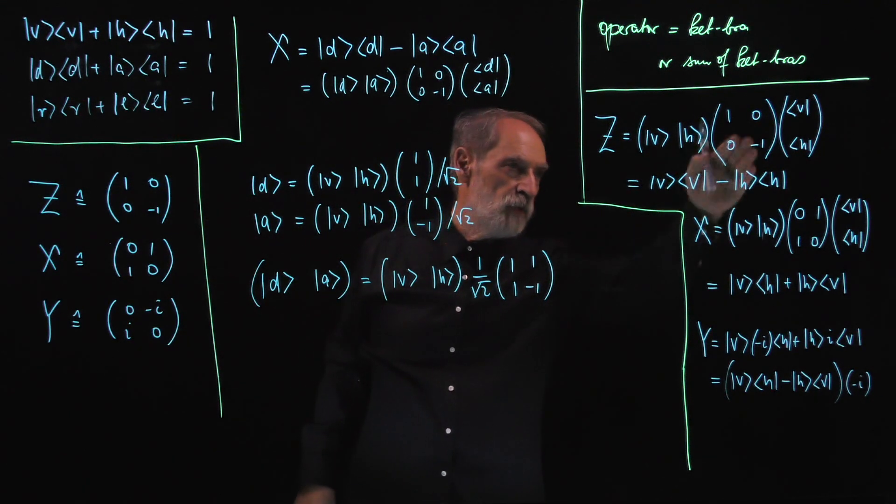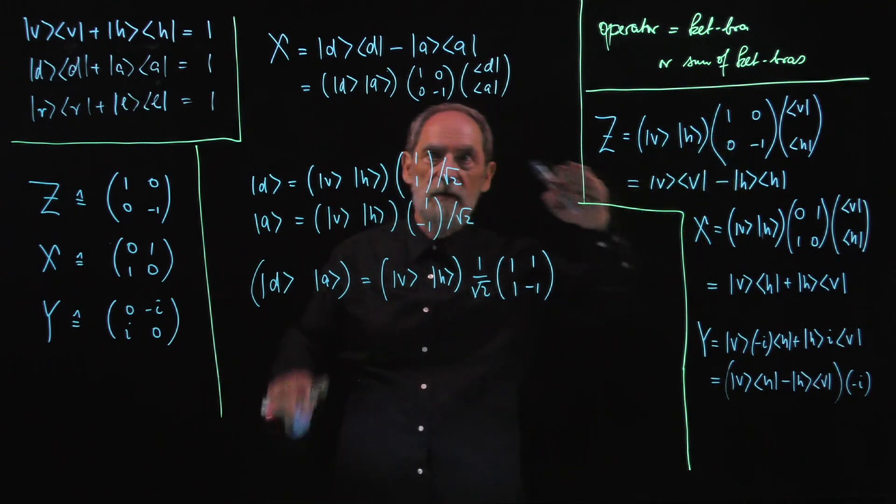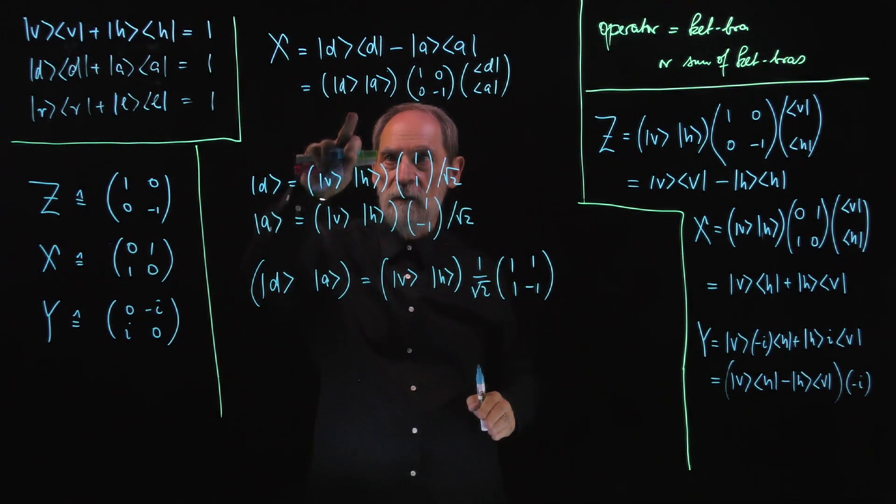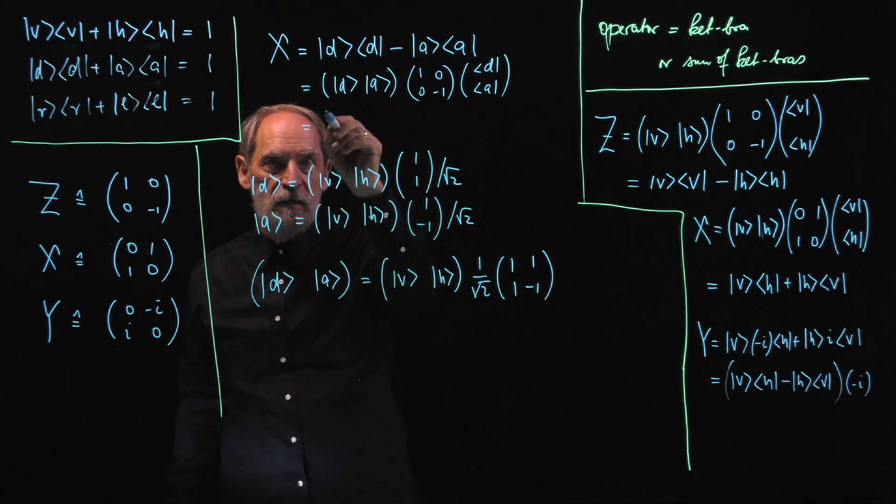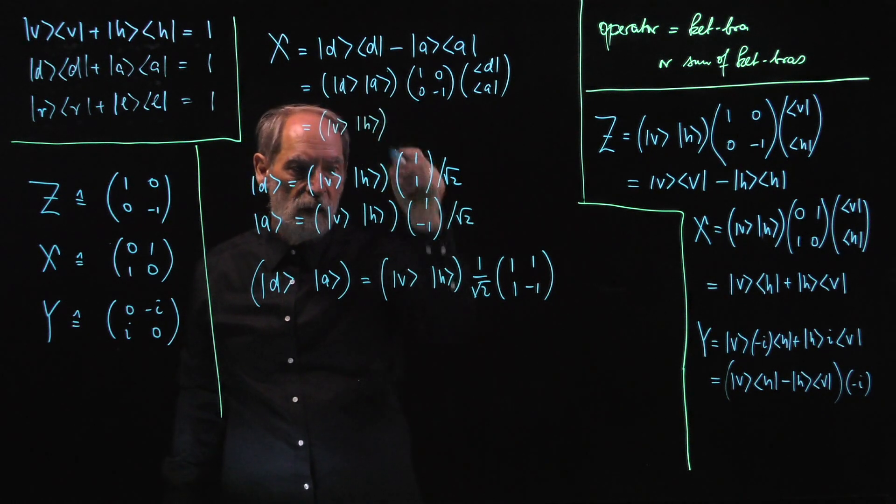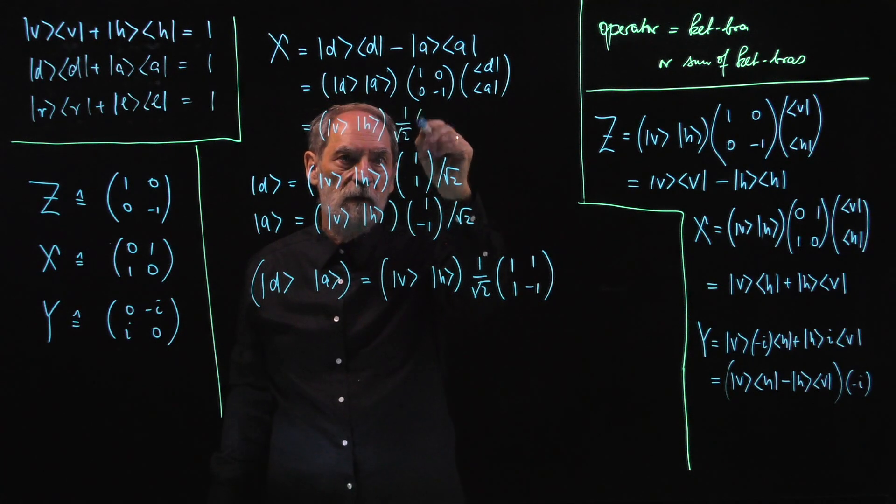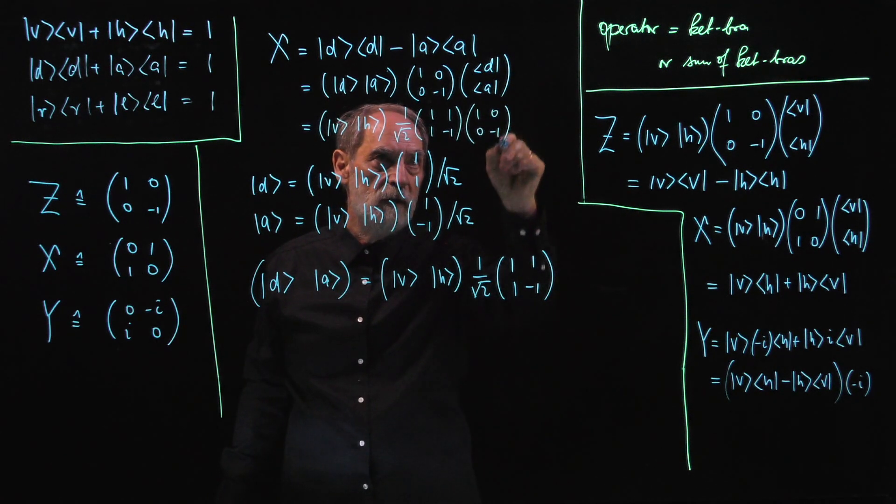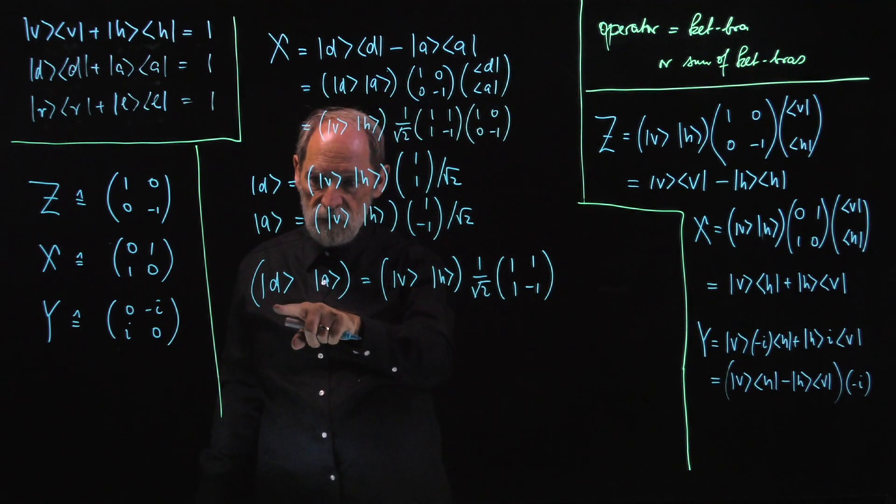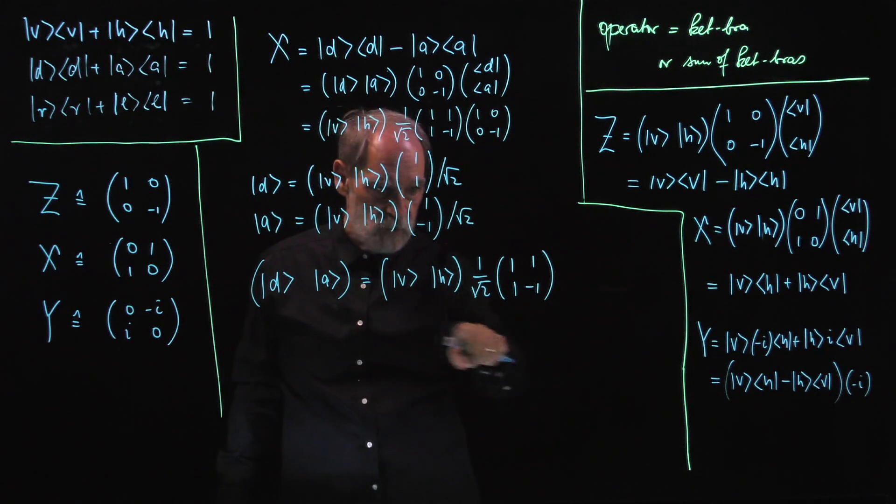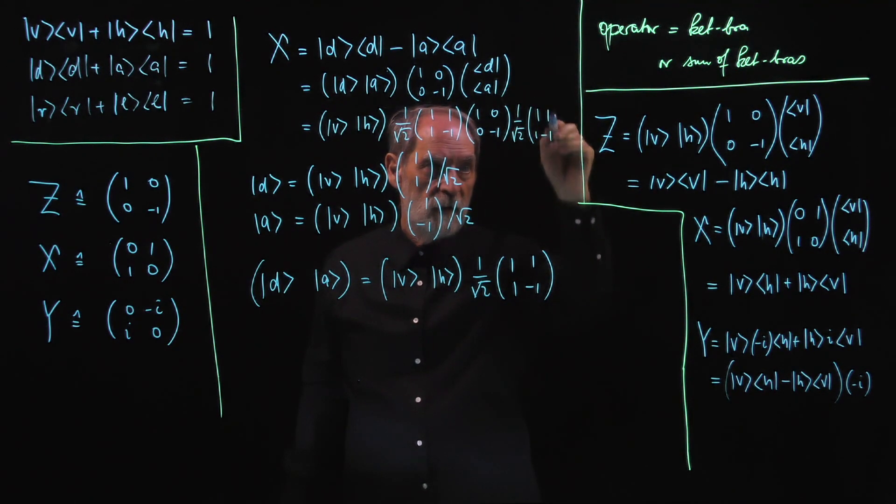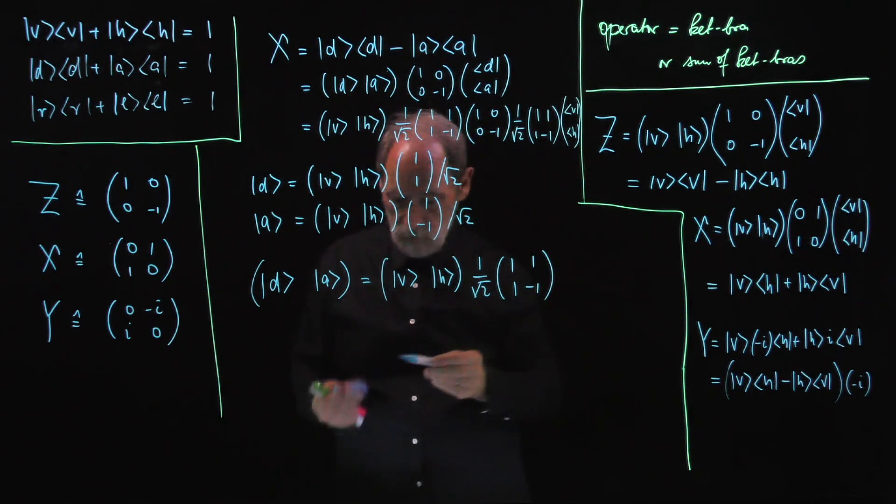The X operator is like the Z operator referring to the D, A basis. So the Z operator refers to the V, H basis. Now, I take that matrix but make it refer to the D, A operator. And that should give me X. So now we put in what we have here and use it there. So I'm now writing this as the V, H. And then, we have this matrix, one over square root of two (1, 1, 1, -1). And this matrix follows, (1, 0, 0, -1). And then, we have the column of bras, which is the adjoint of this row of kets, which is the adjoint of this product. So the adjoint of this matrix is the matrix itself. And then, here we have the column of V and H.